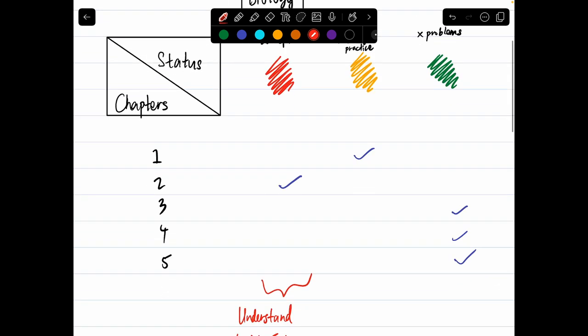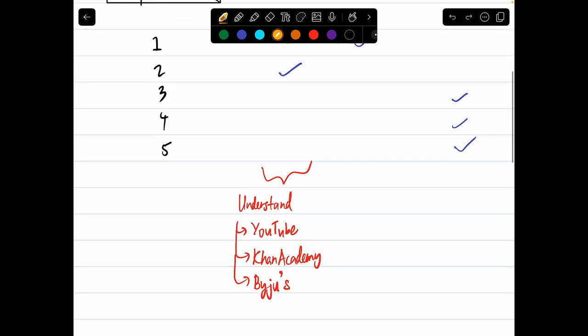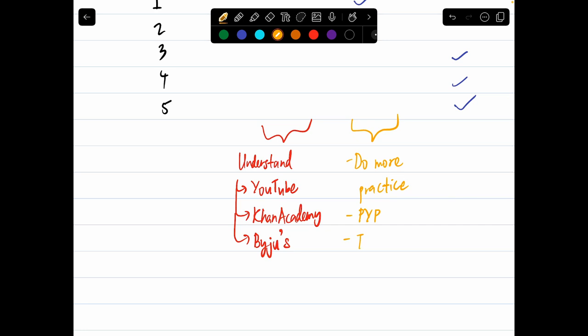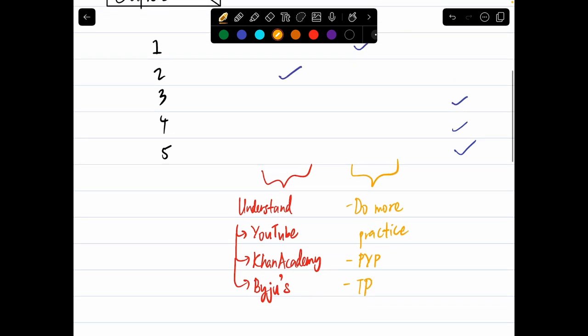All of these steps help you to understand the topic or the chapter in the red category. If you're doing a chapter where you are at the amber status, what you have to do is do more practice. You can do past year papers or you can do topical papers, whatever works, in order to reinforce your memory and teach you how to apply the concept that you learned in actual situations or in examination questions.